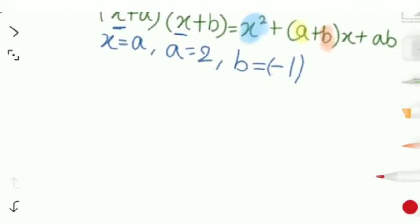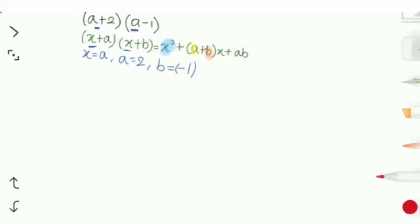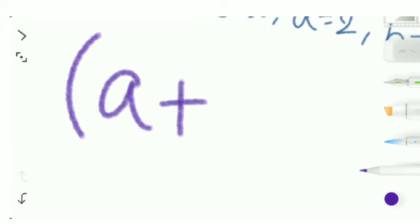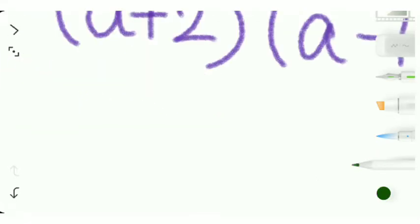Now we know that x equals a, a equals 2, and b equals minus 1. Now that we know it's really easy to solve the sum. We'll just replace the values in the formula. The question is (a+2) into (a-1). Let's solve that, write a squared...